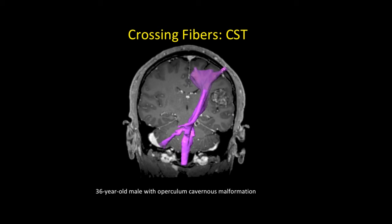Here's another case of a cavernoma in the left frontal operculum where the fibers to the face are omitted. It's a good idea to anticipate where the missing fibers could be and add this to our reports. Just because we don't see the intact fibers on DTI doesn't mean that they aren't there.